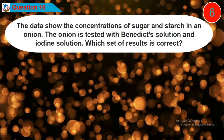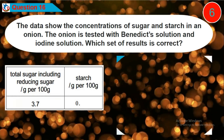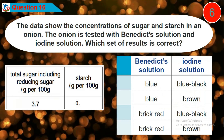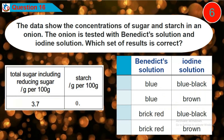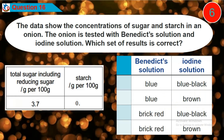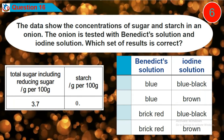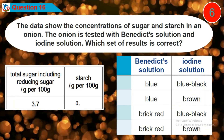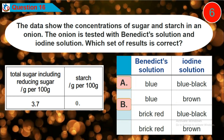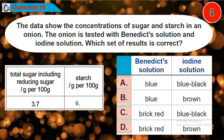Question 16: The data show the concentrations of sugar and starch in an onion. The onion is tested with Benedict's solution and iodine solution. Which set of results is correct? Is it option A, B, C, or D?